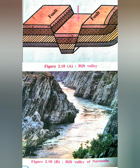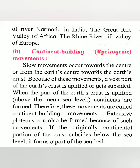See figures 2.10a and 2.10b. Both slopes of the Rift Valley are steep. Examples include the Rift Valley of River Narmada in India, the Great Rift Valley of Africa, and the Rhine River Rift Valley in Europe. One example is found in our own country — the Rift Valley of River Narmada. Let us move on to the next topic.